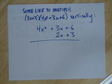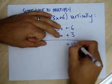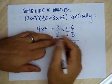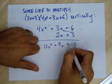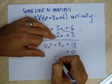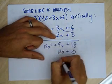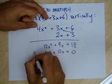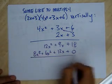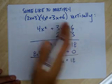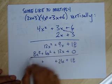Some like to do this multiplication the way we do the standard multiplication algorithm — vertically. So first we do 3 times 6 to get 18, then 3 times 3x is 9x, then 3 times 4x squared is 12x squared. Notice the x terms and x squared terms are lined up. Now we do the 2x: 2x times 6 is 12x, 2x times 3x is 6x squared, and 2x times 4x squared is 8x cubed. Add them all up and combine like terms — they line up nicely. We actually learn later on how to leave spaces for all the different degrees of x.